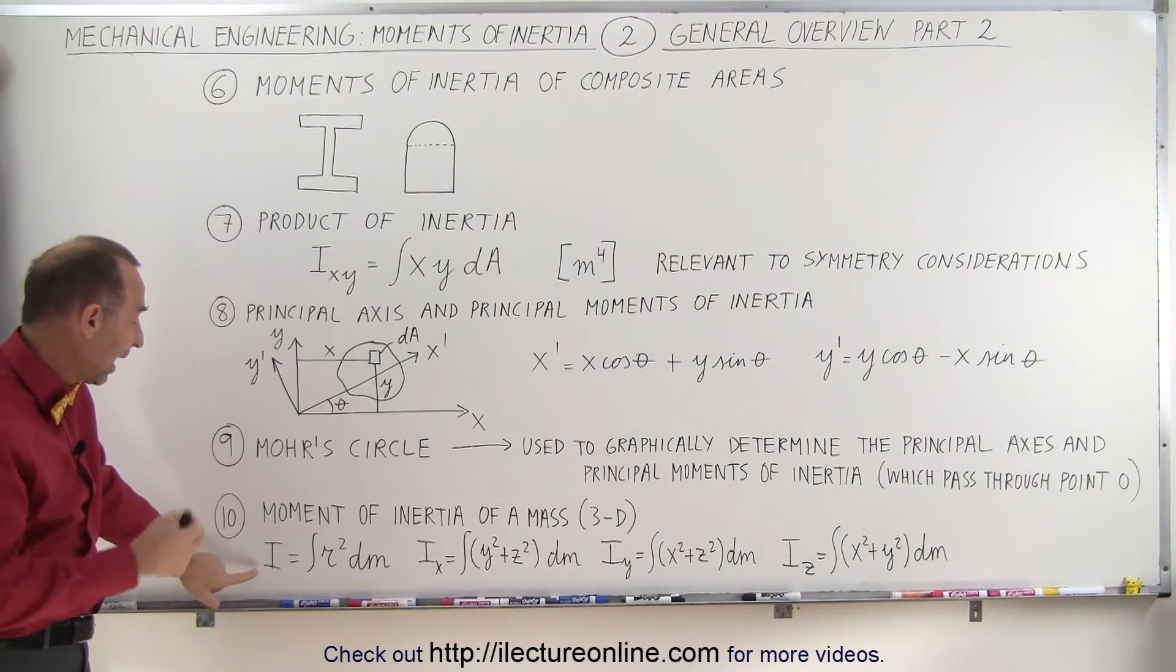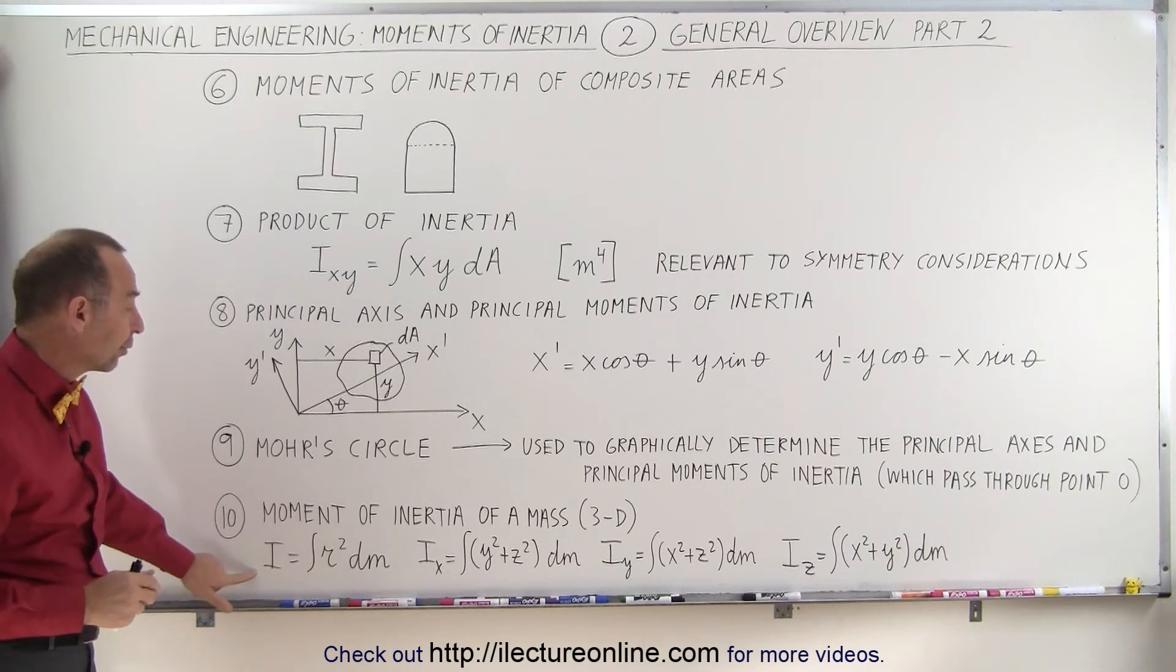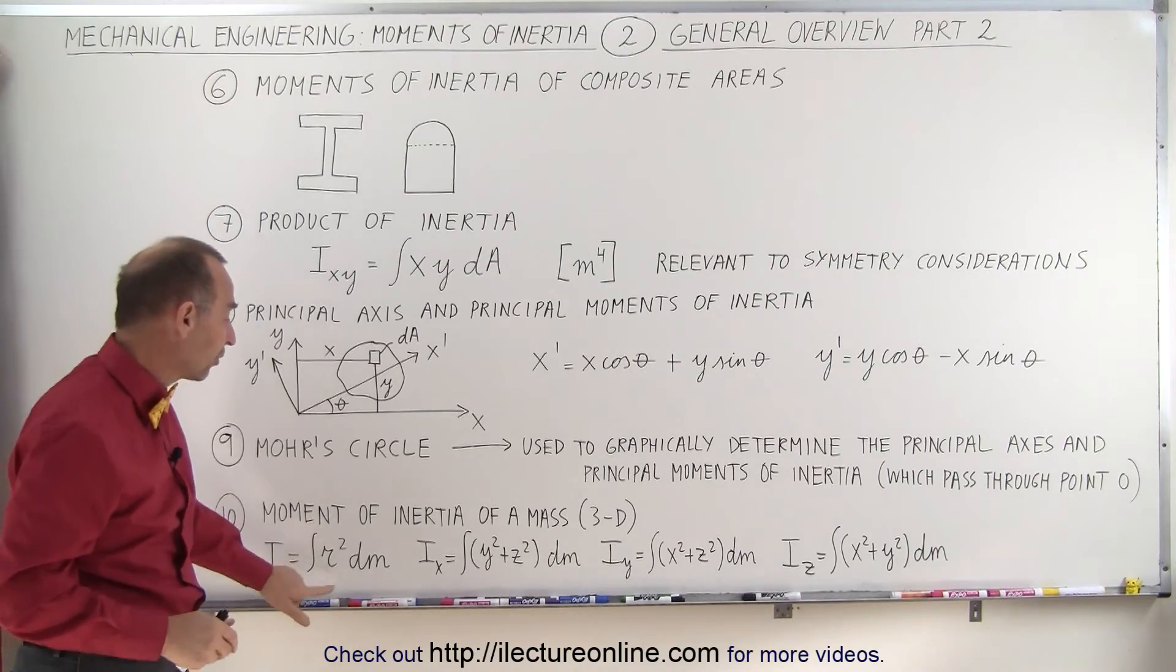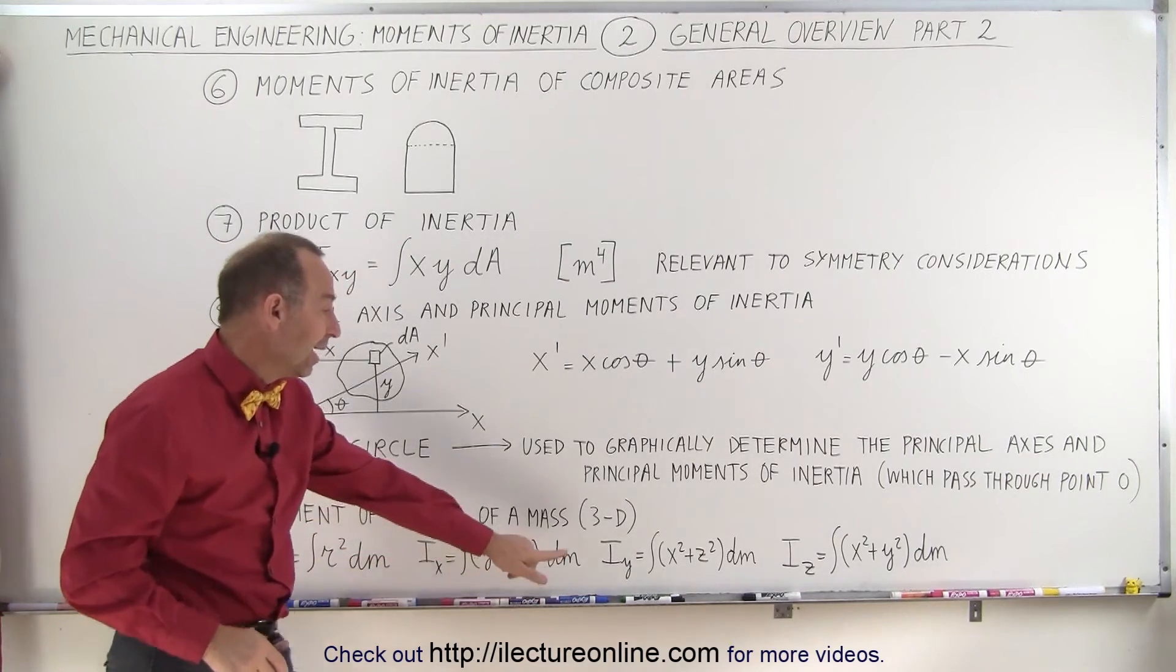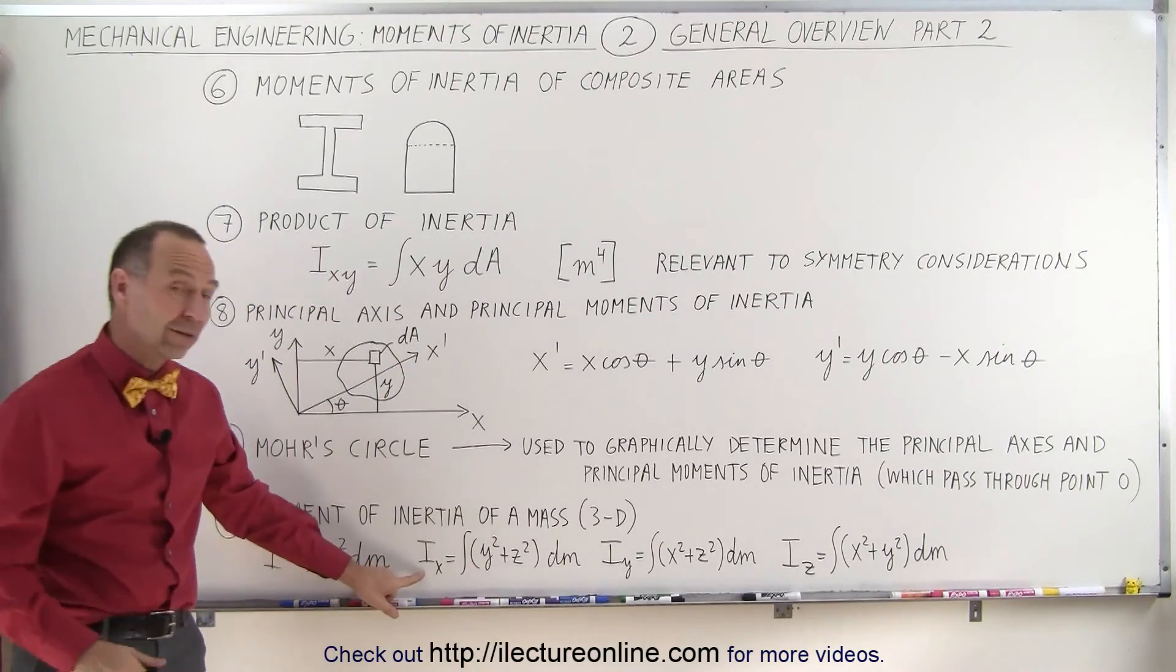We're going to have a mass at a distance r away from the point of rotation and of course that means that we have r expressed in terms of y and z, x and z or x and y to find the moment of inertia relative to the x-axis, the y-axis and the z-axis.